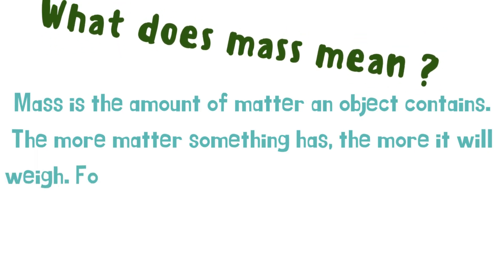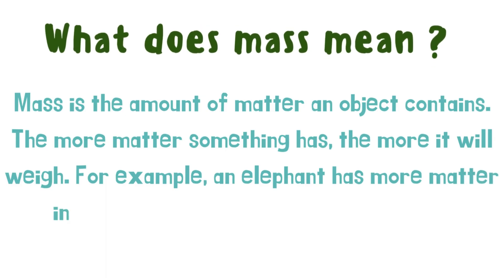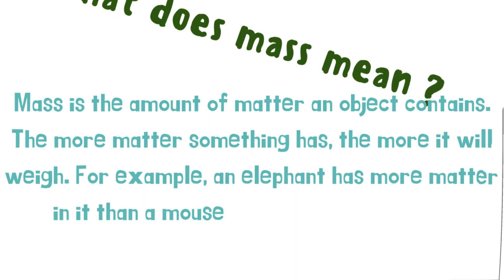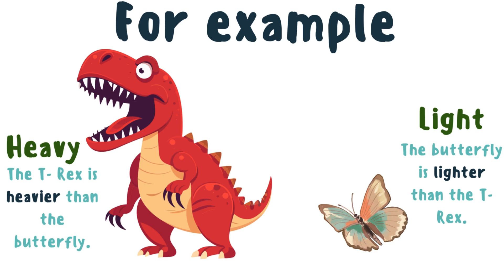For example, an elephant has more matter in it than a mouse, so its mass is heavier. For example, the T-Rex is heavier than the butterfly. The butterfly is lighter than the T-Rex.